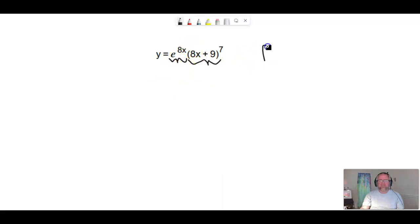So let's write that off to the side. So that's the first times the derivative of the second plus the second times the derivative of the first.